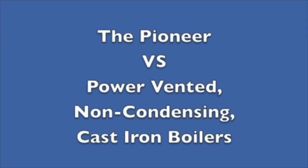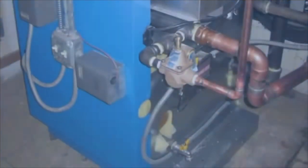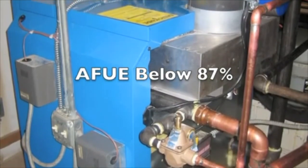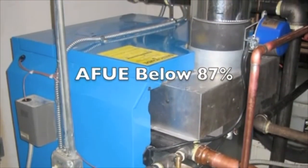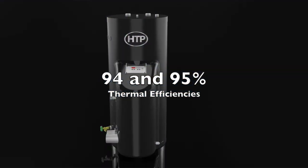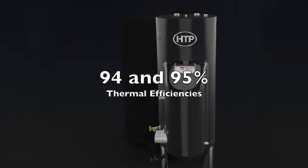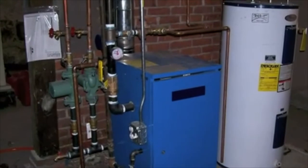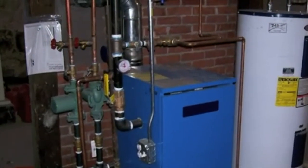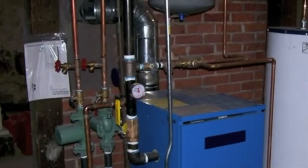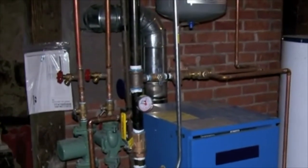The Pioneer versus power vented non-condensing cast iron boilers: power vented cast iron boilers have AFUE ratings at or below 87% compared to the 94% system efficiency of the Pioneer. These boilers typically exhibit condensing in the stack and are rated as vent two or four, requiring very expensive AL29-4C stainless steel materials to handle the corrosive condensate.